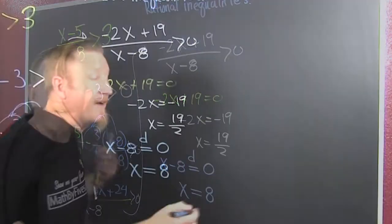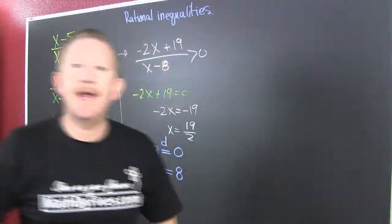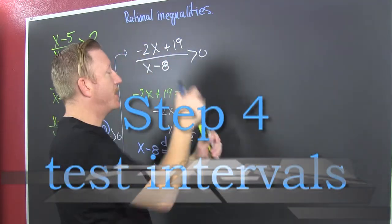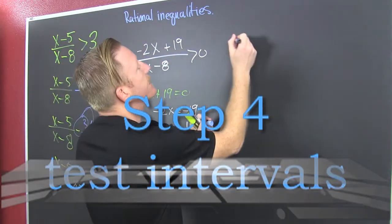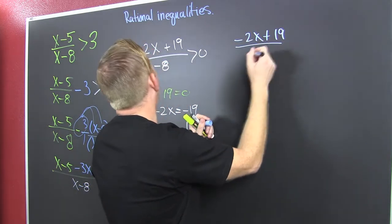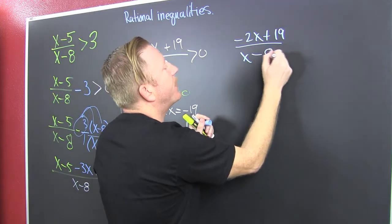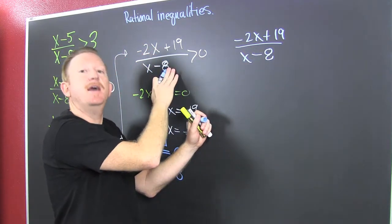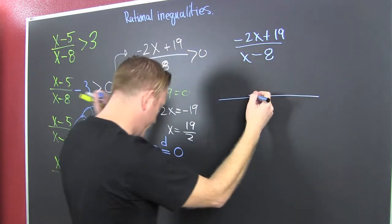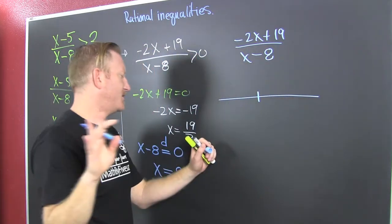Now we have our critical values and we're going to test them on a number line against (minus 2x plus 19) divided by (x minus 8), and we're trying to see where that's bigger than 0. On the number line, our critical values are 19 halves — which is almost 10 — and 8, which is less than that, so it goes over here.